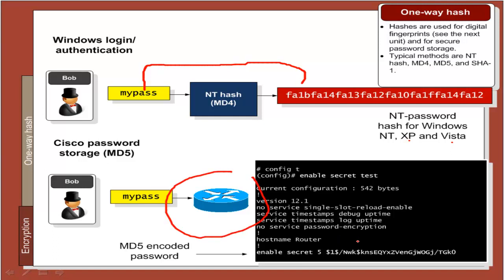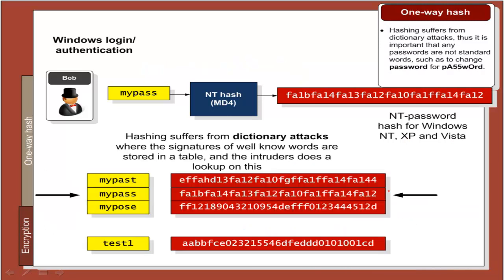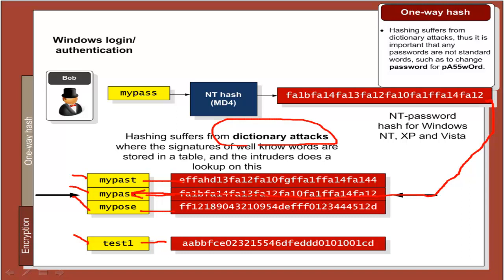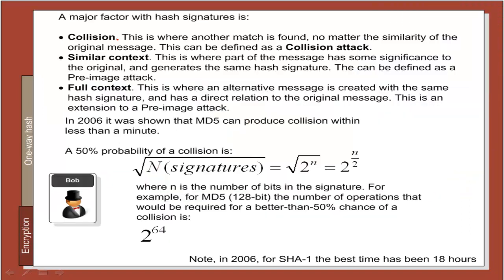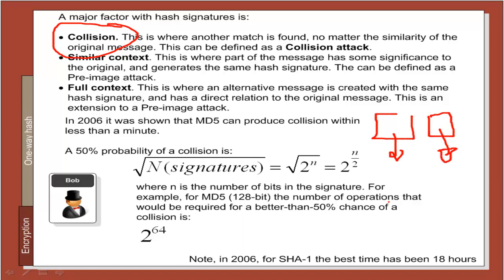Cisco devices also save an MD5-encoded hash of the password. Unfortunately hashing suffers from a dictionary attack, where Eve can go through all possible text values, generate a hash table of equivalents, look up the table, find the hash value, and reverse it back into the original text. Another problem is collision — where different text can produce the same hash signature. It has been shown that MD5 can produce a collision in less than a minute, while SHA-1 is better with a time of about 18 hours.